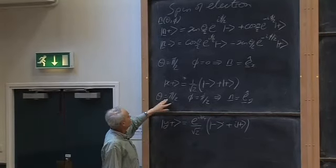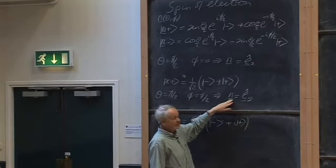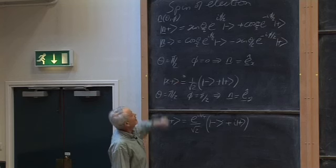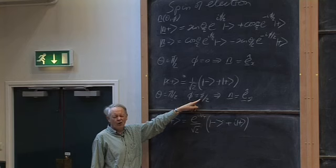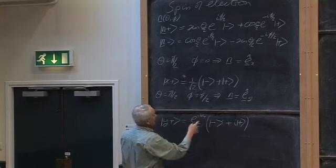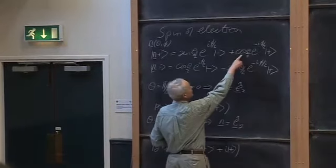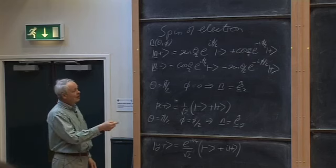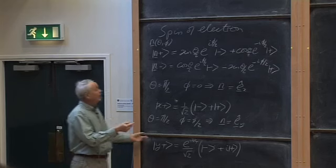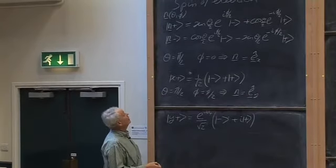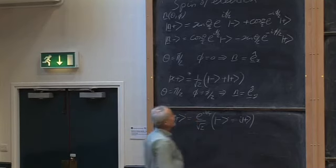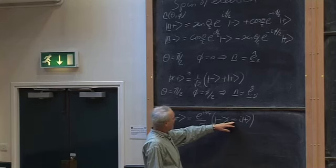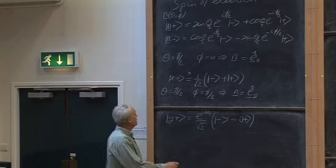Now let's put in θ = π/2, φ = π/2, which by definition of polar coordinates makes the unit vector n the y direction. Then those e^(iφ/2) factors become e^(iπ/4). Taking out the first e^(iπ/4), the second one becomes e^(−iπ/4) twice, i.e. e^(−iπ/2), which is minus i. The sign is of no importance — I thought it was plus i but it does look like minus i at the moment.